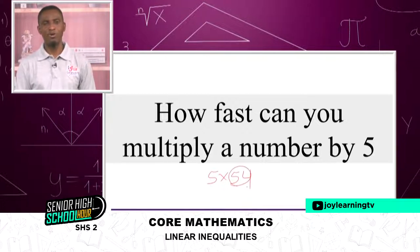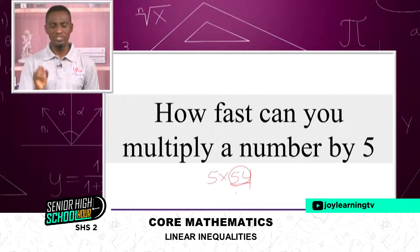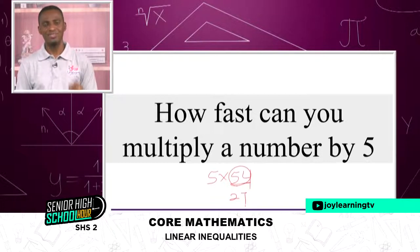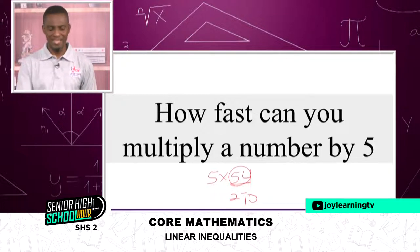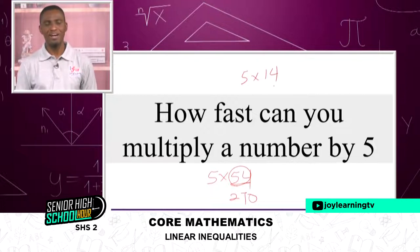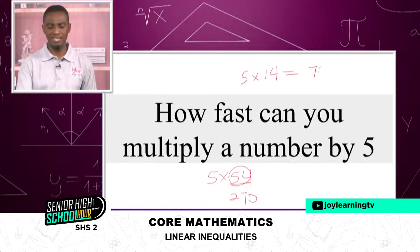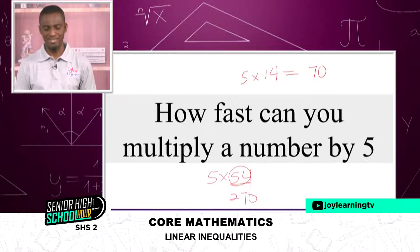Let's say five times 54, and 54 is an even number. All you need to do is split 54 into two — divide 54 by two — and you get 27. Then attach a zero to the right, so five times 54 becomes 270. Similarly, for five times 14: half of 14 is 7, attach zero, and the answer is 70.